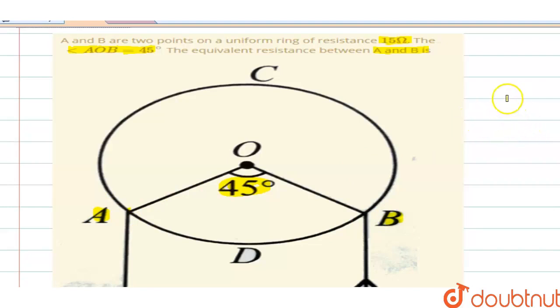Now to start, we have a uniform ring, and this whole ring has a resistance of 15 ohms.